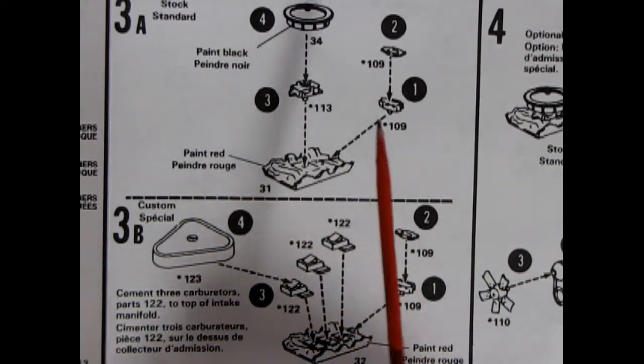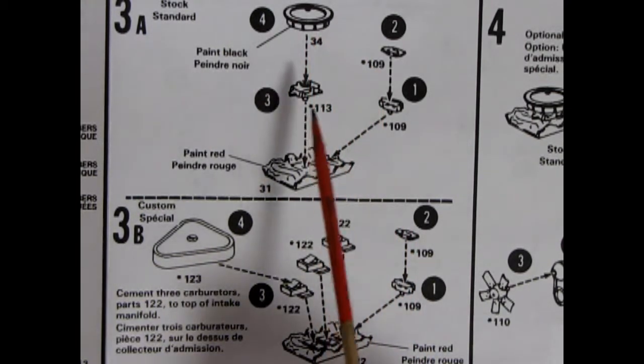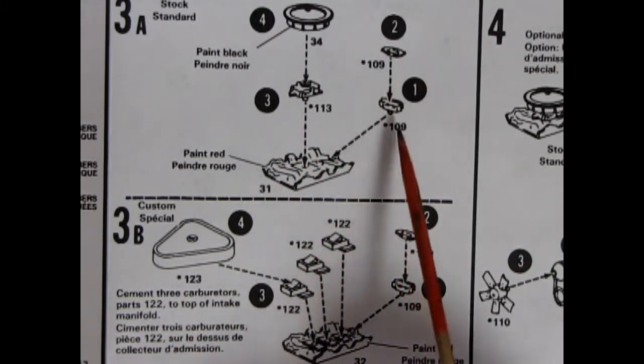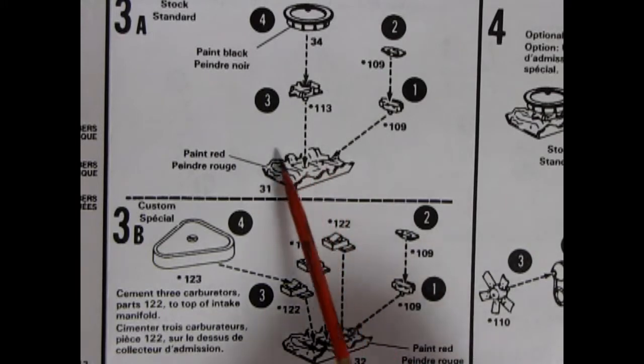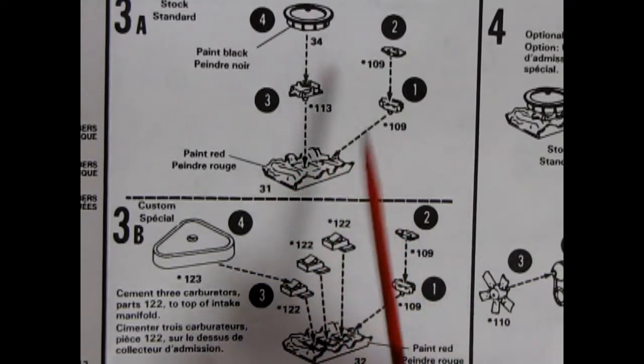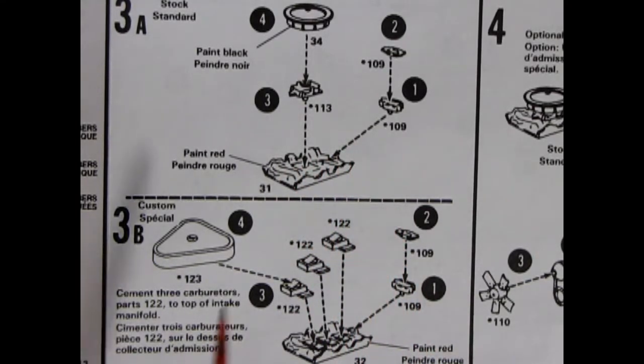So what we have here is our actual air cleaner, carburetor, the distributor here in two pieces with the shield of course and then our intake manifold. Now for the custom you do have a choice of the Tri-Carbs which is an earlier style engine upgrade. However this would give the 350 quite a lot more performance in horsepower. There's our triangular air cleaner, the three carburetors, the intake manifold and again our two-piece distributor.